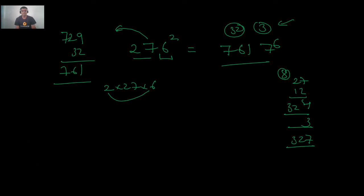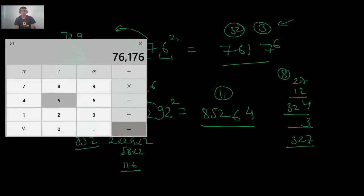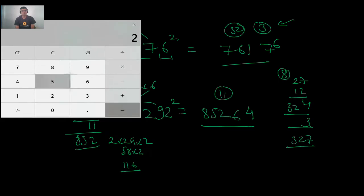Let us try 292². Parts: a = 29, b = 2. Step 1: 2² = 4; nothing carried. Step 2: 2 × 29 × 2 = 116; write 6, carry 11. Step 3: 29² = 841; add 11 to get 852. Result: 85264. Verification: 292 × 292 = 85264. Correct! This takes only about 10 seconds if your calculation is fast.